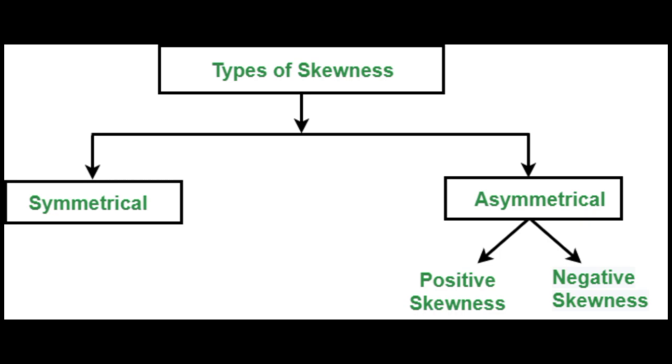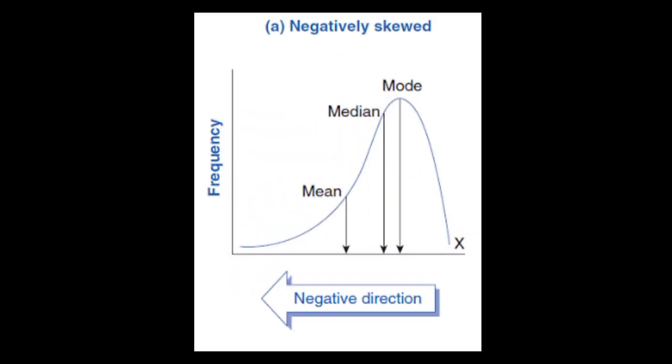First, we will see negatively skewed. Negative skewness is also called left skewness. A left skewed distribution is longer on the left side of its peak than on its right side.